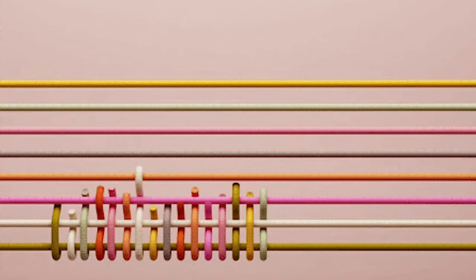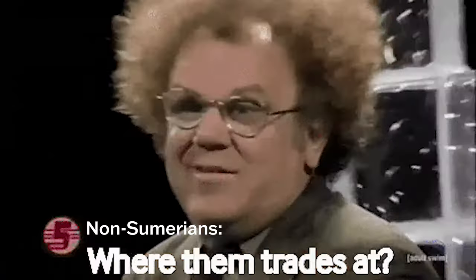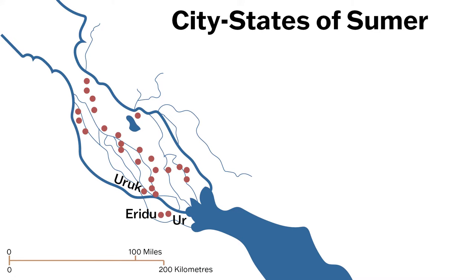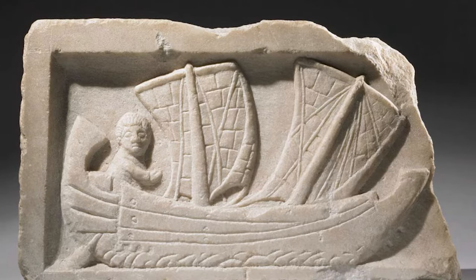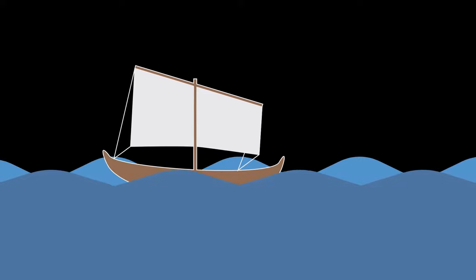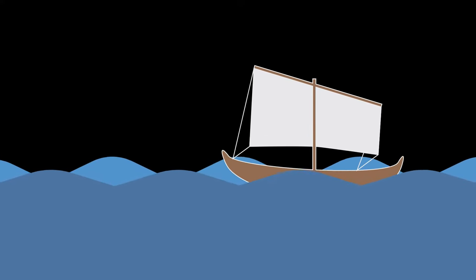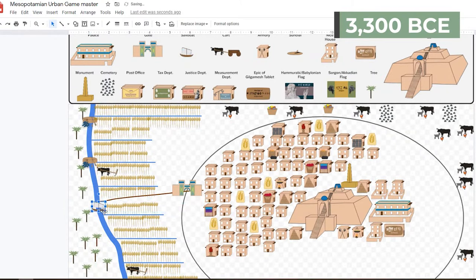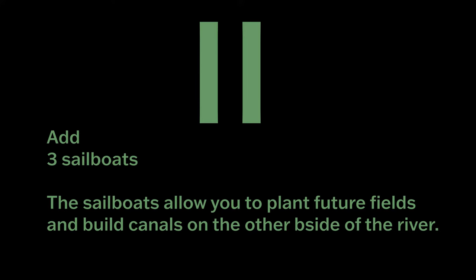As people continued getting better at their specialization, foreign people became interested in trading. It was tedious carrying everything back and forth on donkeys and camels or by yourself. But most Sumerian city-states were built near rivers. Sumerians invented the sailboat by adding a cloth sail to a boat made of wood or papyrus. Sailboats helped trade, but also increased opportunities for fishermen and managing the canal systems. Sumerians traded as far as the Indus River, Anatolia, and Egypt. Add 3 sailboats to your river. Now that you can access the other bank of the river easier, you may plant fields there and build canals.